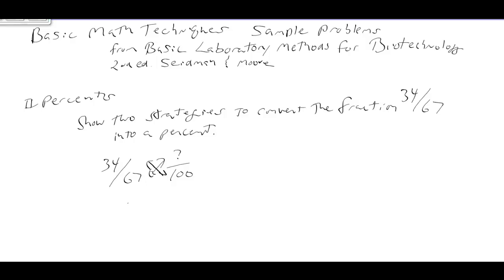We cross-multiply, so we get 34 times 100 is equal to 67 times our unknown. So 34 times 100 over 67 equals our answer.